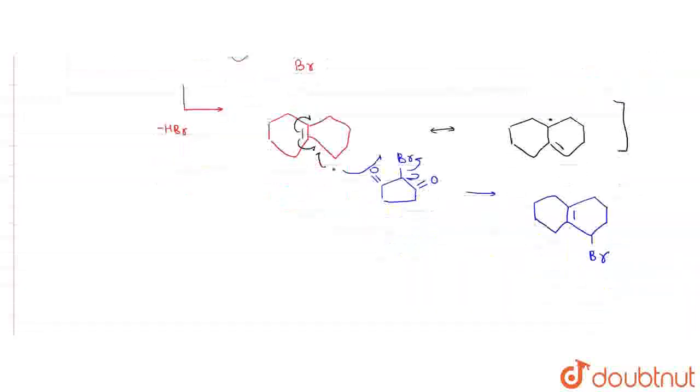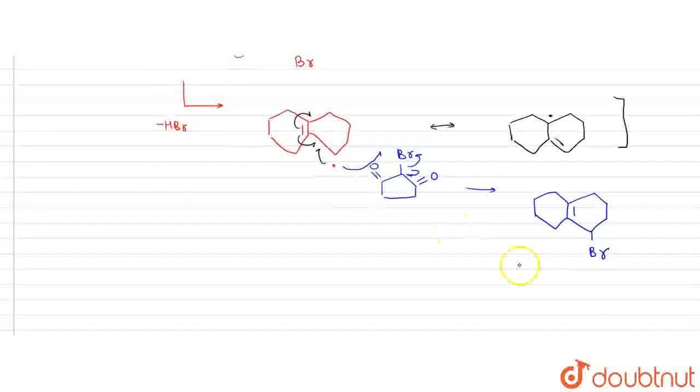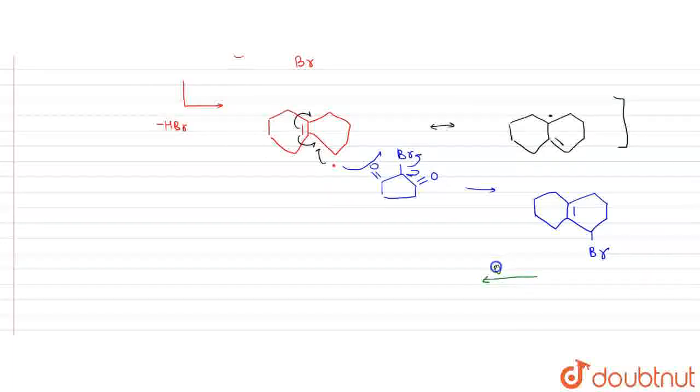We will react this product with alcoholic KOH. What happens with OH-? OH- will abstract hydrogen. Now see, where is hydrogen abstracted? If hydrogen is abstracted here, the bond will leave. We call this E2 elimination.